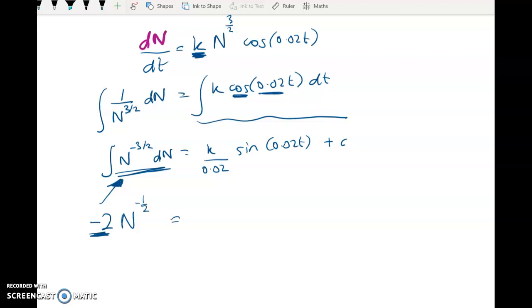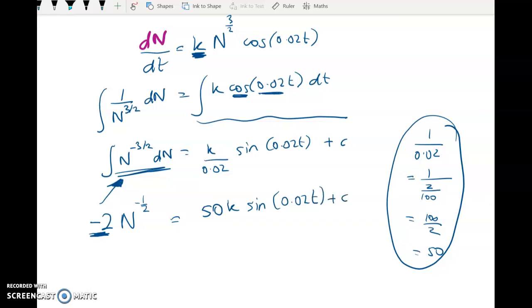Here, 1 over 0.02 is the same as 1 over 2 over 100, which equals 100 over 2, which is 50. Now you don't have to do all of that, but you have to not make a mistake with it. So some of you probably want to go a little bit slower on this step than you did in class. So that's where we've got it down to.